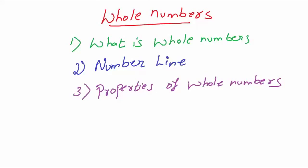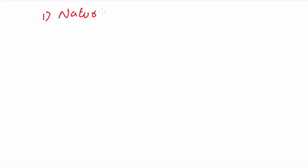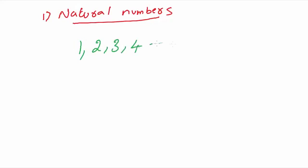Before we get into whole numbers, let us learn a few basics. In these basics, let us learn about natural numbers. What are natural numbers? The basic numbers we use start from 1, 2, 3, 4, and they keep going on. These are called natural numbers because we use them naturally for counting.